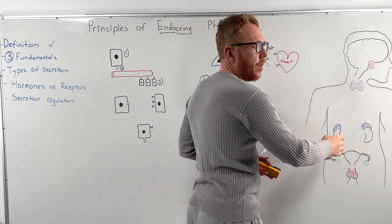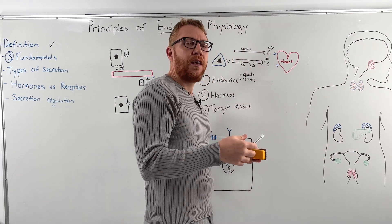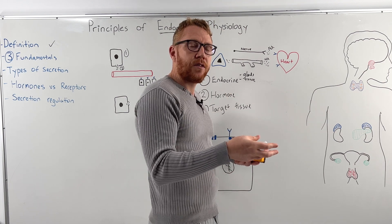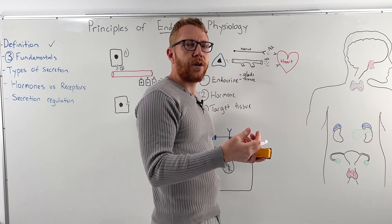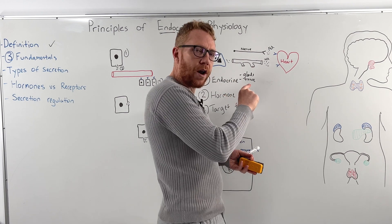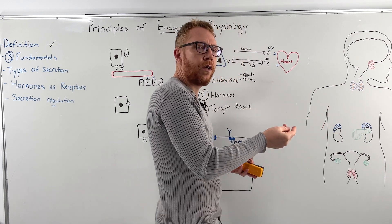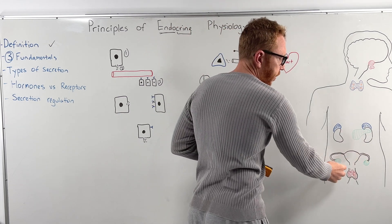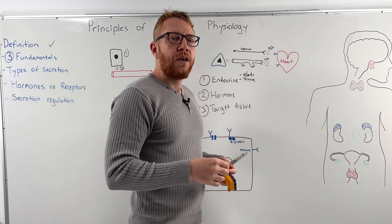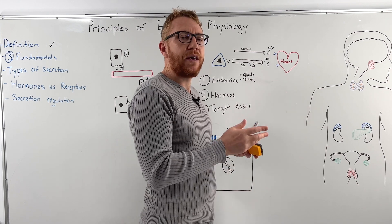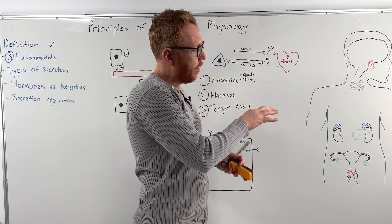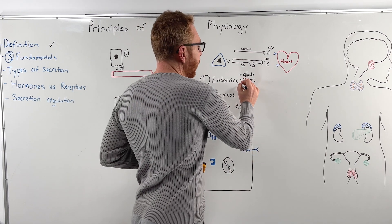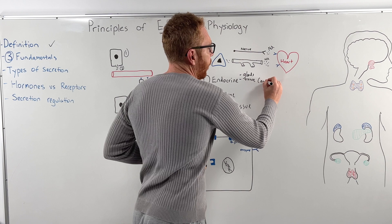Same with the pancreas. The pancreas mostly is the exocrine organ, which means it releases digestive enzymes into the duodenum for digestion. But some of it is endocrine in nature, like insulin and glucagon, to help regulate blood sugar levels. And same with the gonads, whether it's the ovaries or the testes, their primary function is to make eggs or sperm, but they can also produce hormones like testosterone and estrogen.